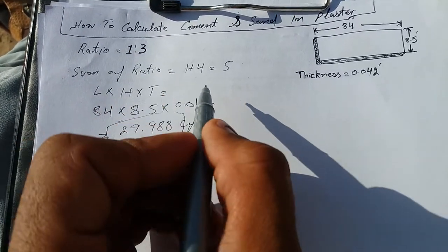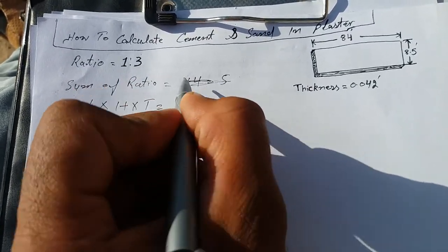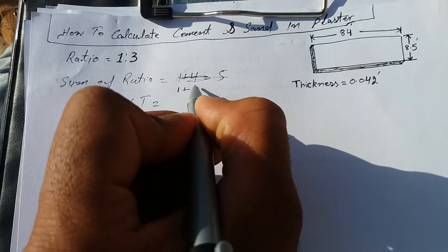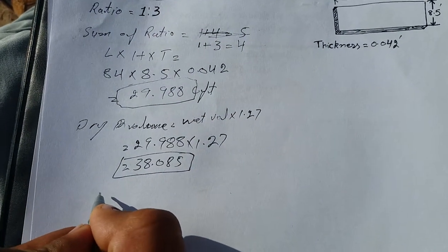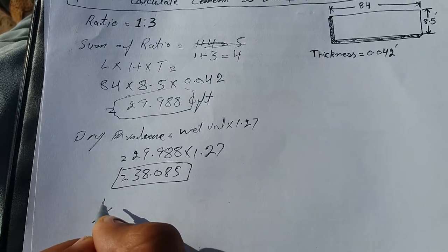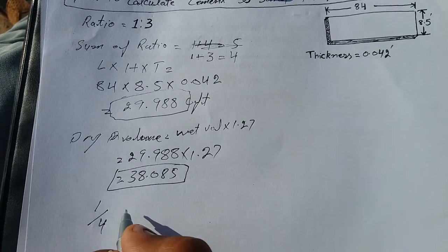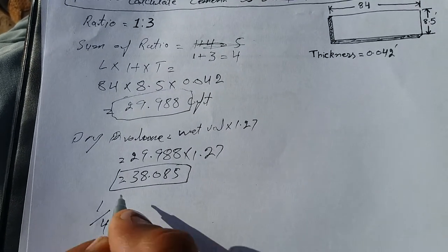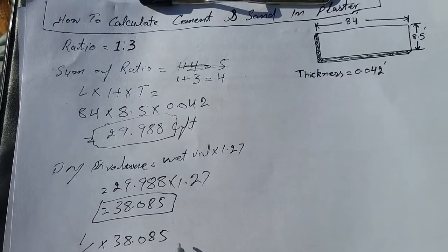The sum of ratio is 1 plus 3, which equals 4. So 1 divided by 4, because we want to take out the quantity of cement. So 1 divided by 4 multiplied with dry volume 38.085.